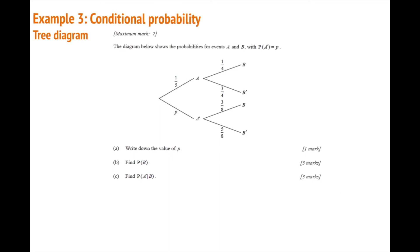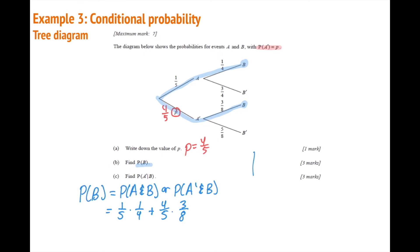Example three: a tree diagram shows probabilities for events A and B, where the probability of not-A equals p. Part a: since the two branches must add up to one, and the branch for A is one-fifth, p must be four-fifths. Part b: the probability of B occurs at the end of two branches — either A-then-B or not-A-then-B — so we add both branches. The probability of B works out to 7/20, or 0.35.